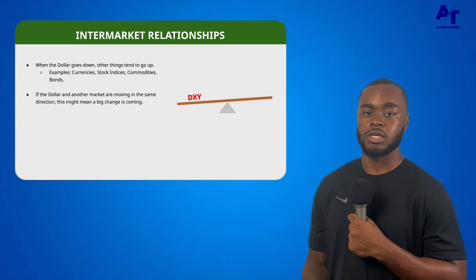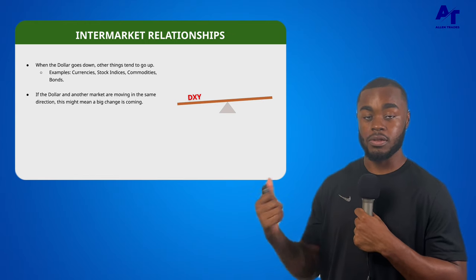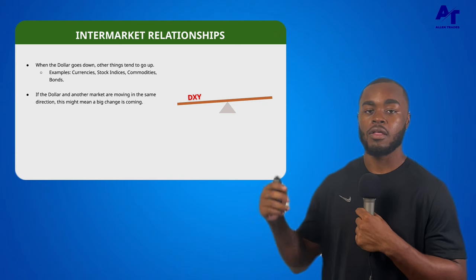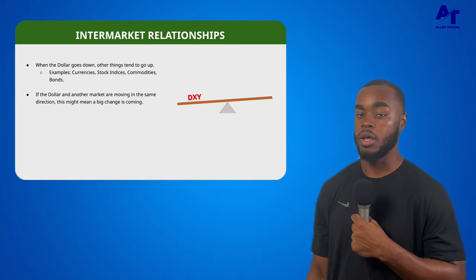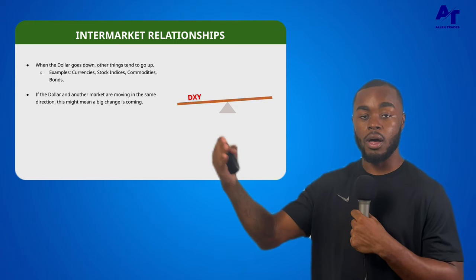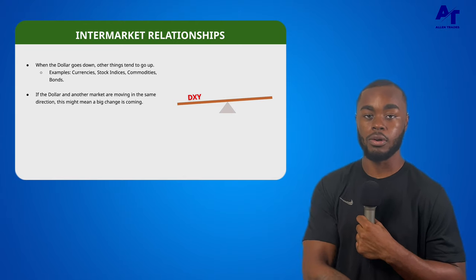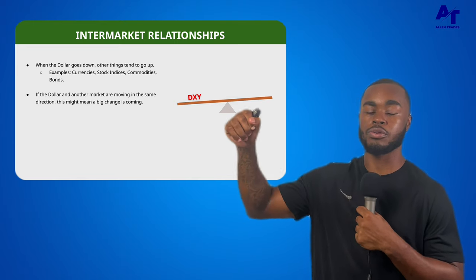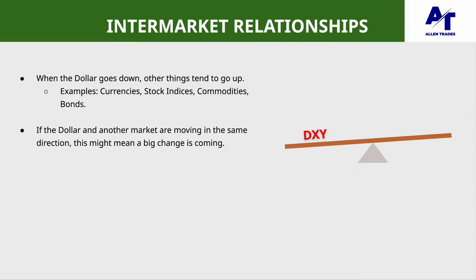So what are inter-market relationships? Basically, all the markets we went over in section one, where we talked about the different types of markets that you can trade, they're all correlated to each other, meaning that when one trades a certain way, another market will trade a certain way. For example, if the dollar index is going up, then treasury bonds more times than not will be trading lower. Think of everything as being tied to a string — when you pull one string, the other drops or goes up with it. When the dollar goes down, other things tend to go up.